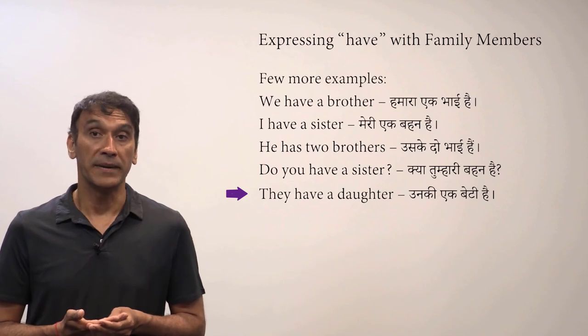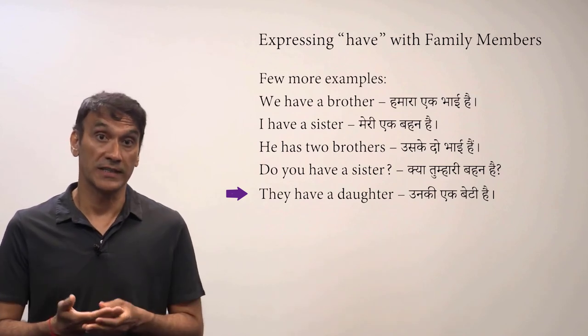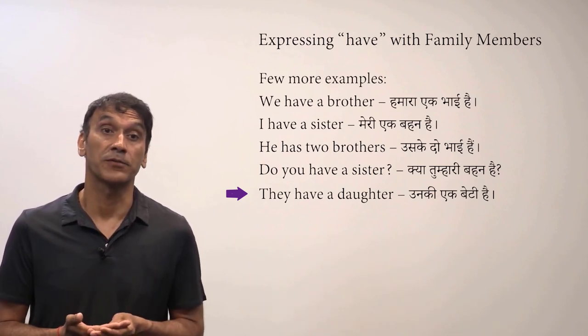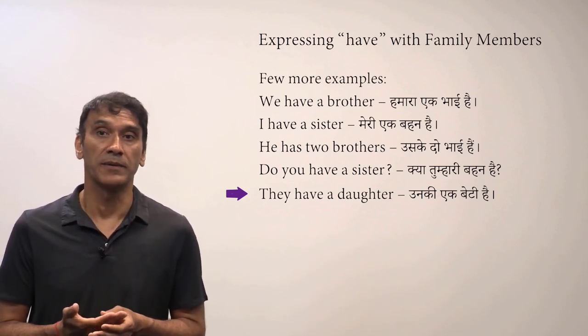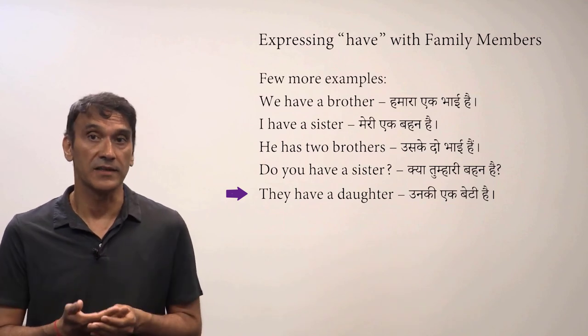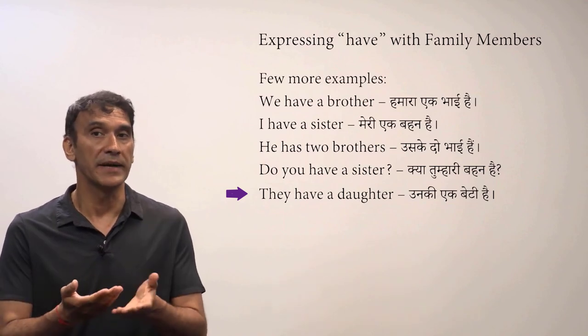Beti (daughter) is feminine, so the feminine possessive pronoun unki is used. Unki means 'their' (feminine). Unki ek beti hai — 'they have a daughter.'